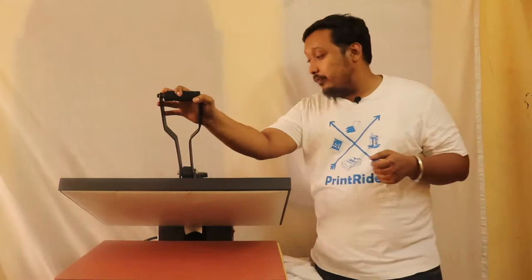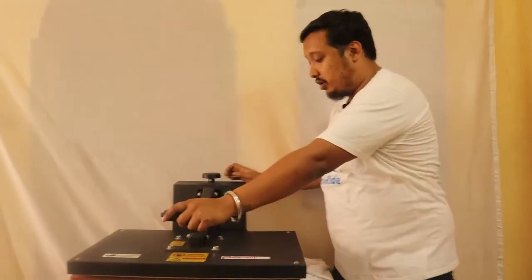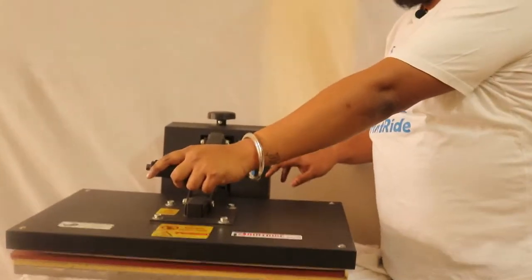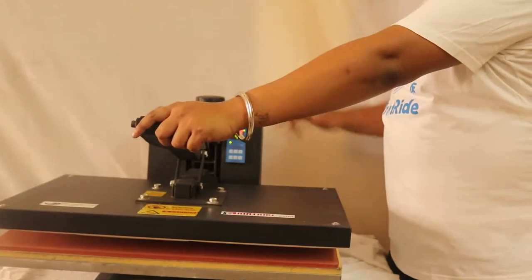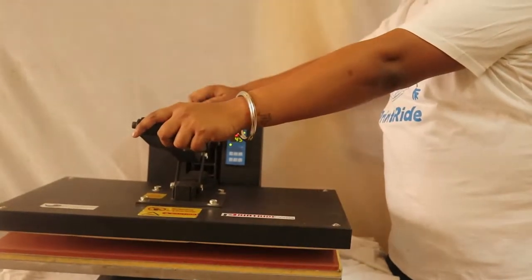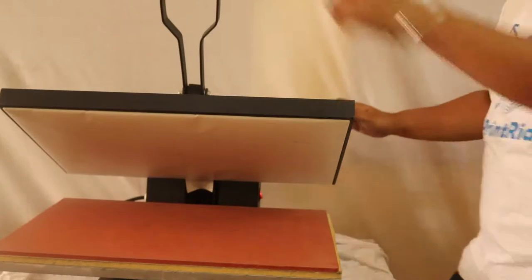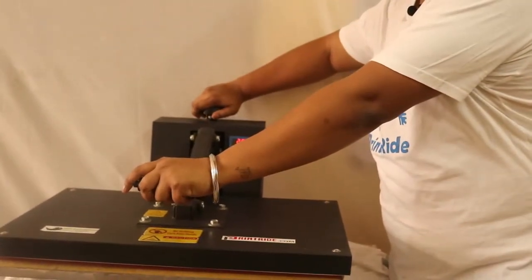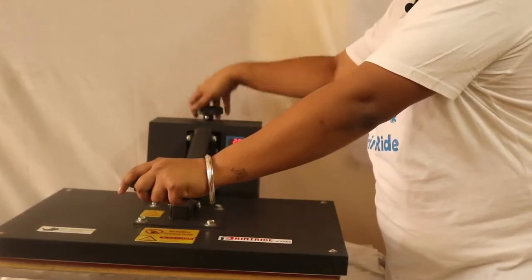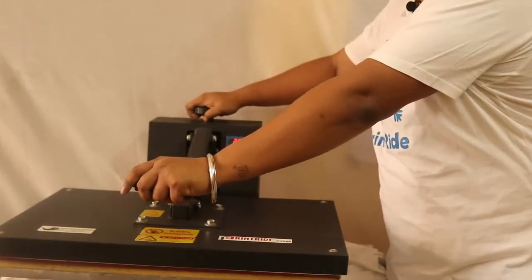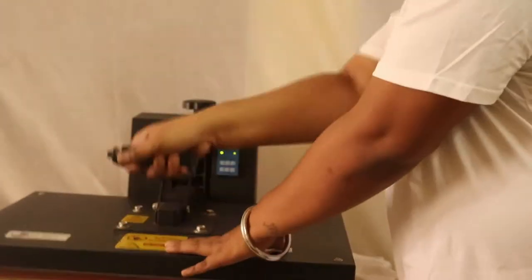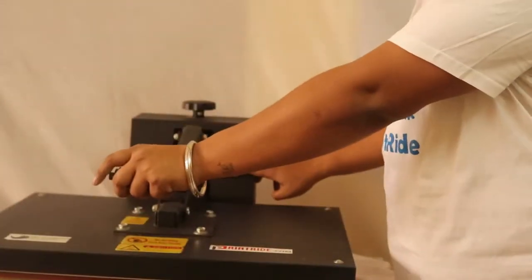First of all, we turn on the switch. The timer will be on once the switch is on. We have to adjust the heat and adjust the pressure what you want. If you rotate it towards right, it will be more tight. If you rotate it towards left, it will be less tight. So according to that, you adjust your high tension.